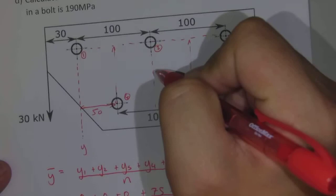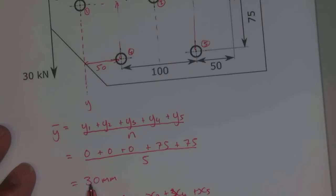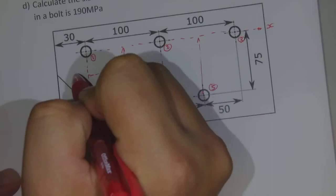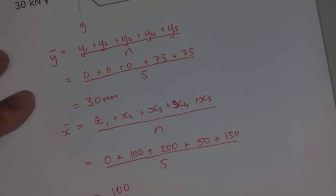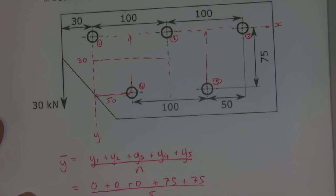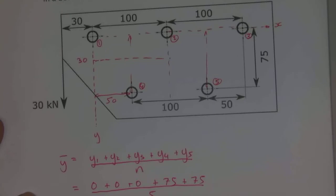So now we have the centroid of the bolt group. It will be 30 millimeters in the y direction, and 100 millimeters in the x direction, like we have here. So there is our centroid.